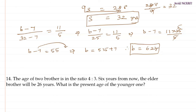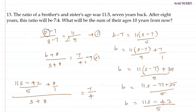Now we have the value of brother's age and sister's age, which is 62 and 32. They are asking for after 10 years, so we add 10 years to both ages. Sister's age plus 10 years equals 42 years, and brother's age plus 10 years equals 72 years. So brother and sister's ages after 10 years are 72 and 42, and the sum of their ages after 10 years is 72 plus 42 equals 114.